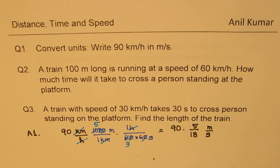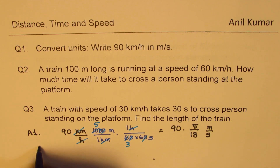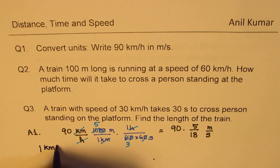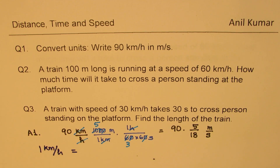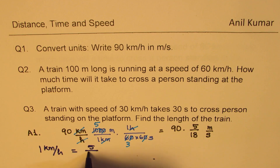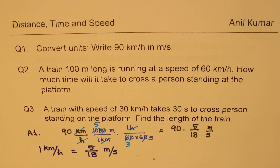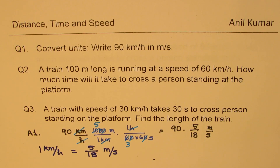Remember this particular formula: 1 kilometer per hour is equal to 5 over 18 meters per second. This is very important to remember, especially when you are doing multiple choice questions and time is critical.